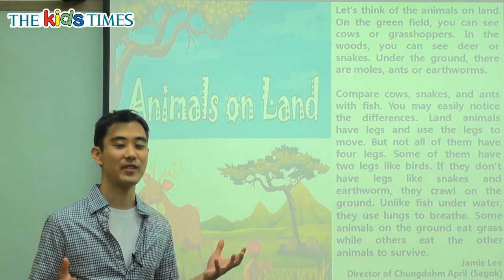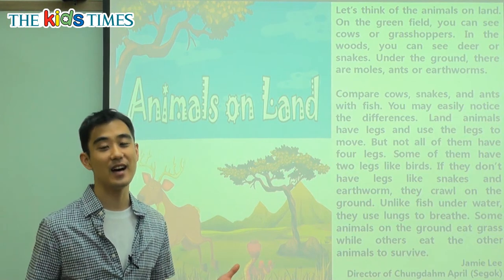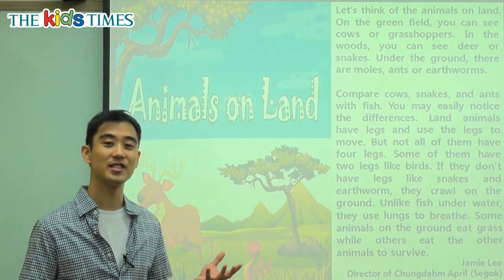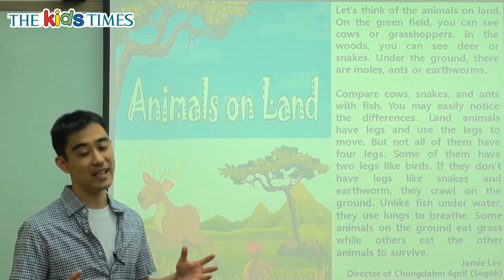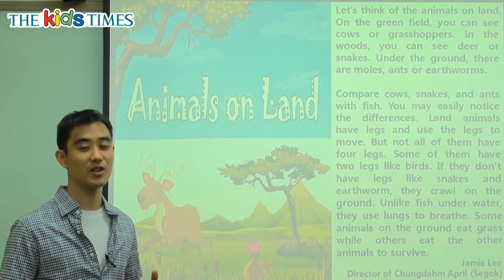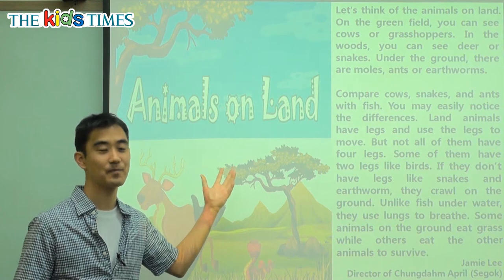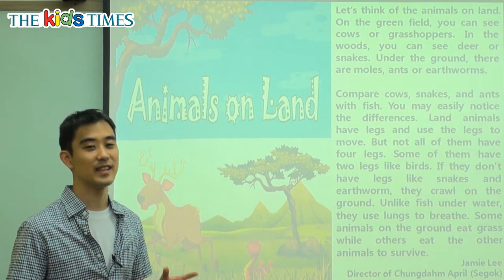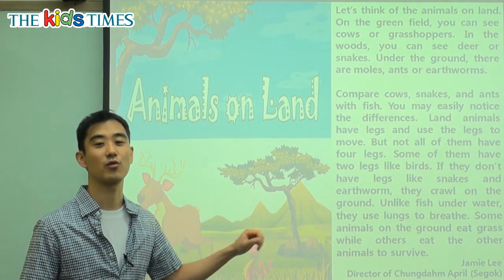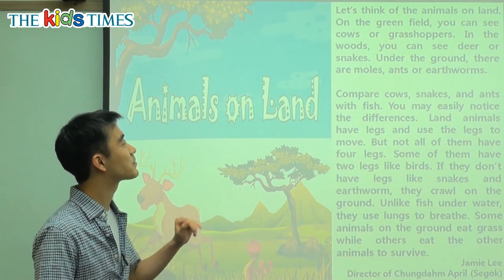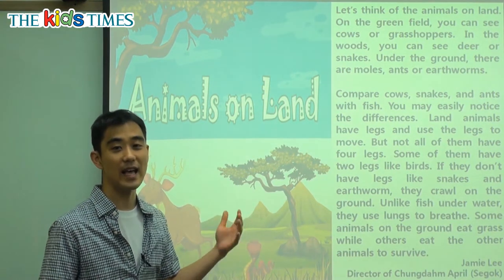Now, there are all sorts of animals in the world. There are animals that fly, there are animals in the ocean, there are animals in the trees. But today's topic, we are going to talk about animals on land — not the flying ones and not the swimming ones, but the ones that walk or crawl on the land. So let's think of the animals on land.